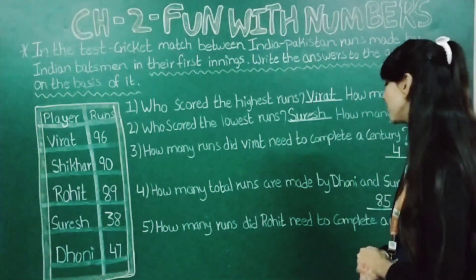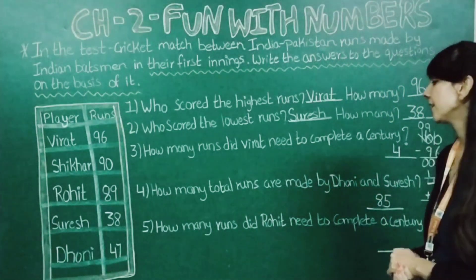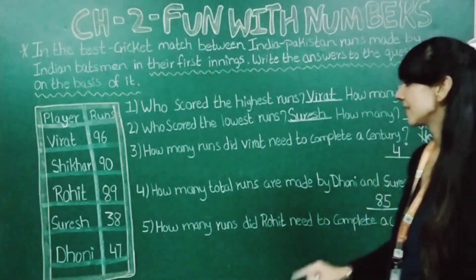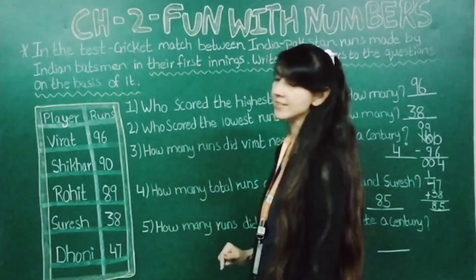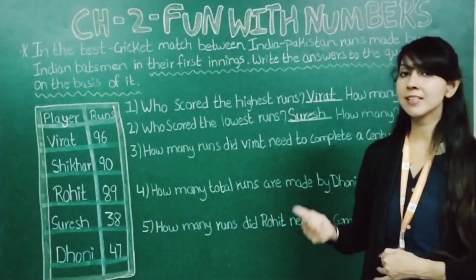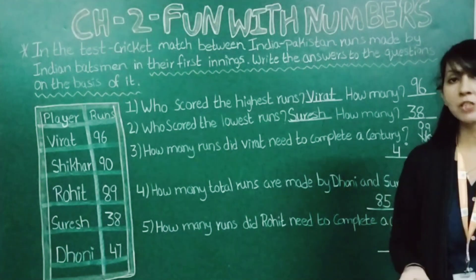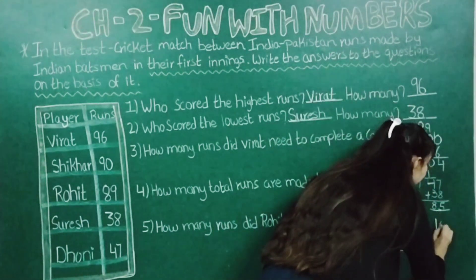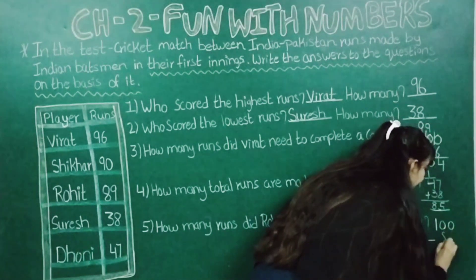Now let's see another question: how many runs did Rohit need to complete a century? Rohit has made 89 runs. So what we will do here — we will just subtract 89 from 100. Here we will write 100 minus 89.